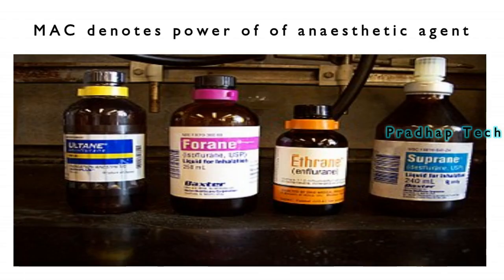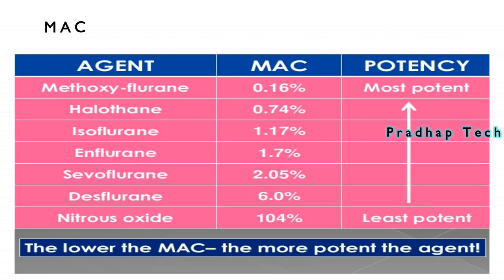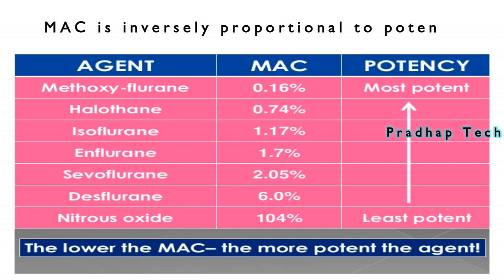MAC denotes potency — the power of a chemical that makes effect — of anesthetic agents. MAC is inversely proportional to potency: lower MAC means more potent, higher MAC means less potent. For example, nitrous oxide has a MAC of 105 and is less potent, while xenon has a MAC of 70 and is more potent.